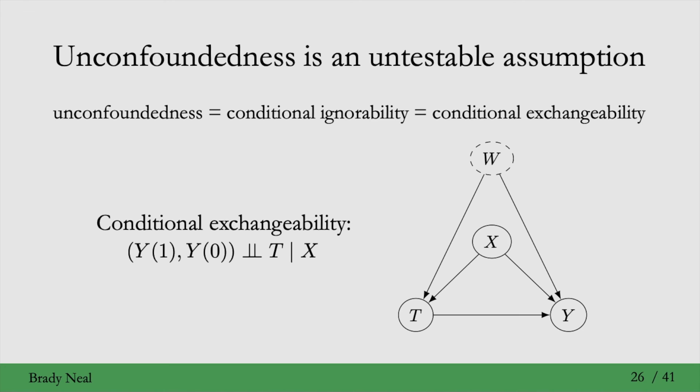But what if there is some other W here that is also a confounder of the effect of T on Y? Then we don't have conditional exchangeability given X. And W here is unobserved. In general, we never know if there are unobserved confounders. So that's why unconfoundedness is an untestable assumption.